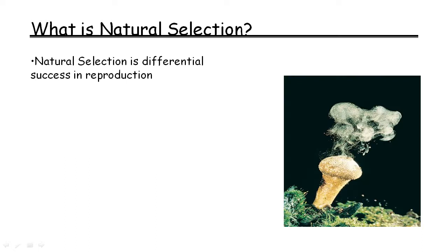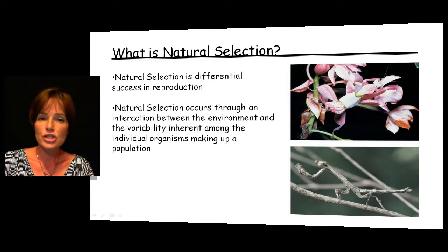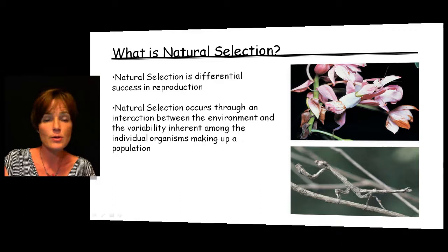So what is this natural selection that Charles Darwin was talking about? Organisms produce way too many offspring and not all of those offspring are going to survive — there is differential success in reproduction. We can see massive amounts of spores coming out of fungi, and each of those spores is different and unique; some will have a better chance of survival than others. Natural selection occurs through an interaction between the environment and the variability present within the individuals making up a population. That environment changes from time to time, which means the important variability changes as well.